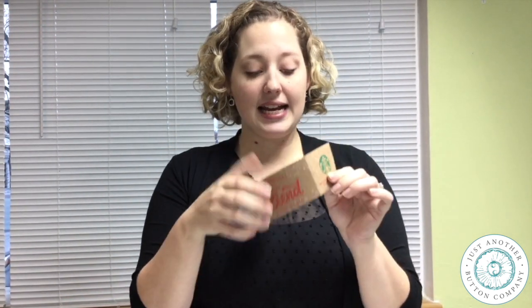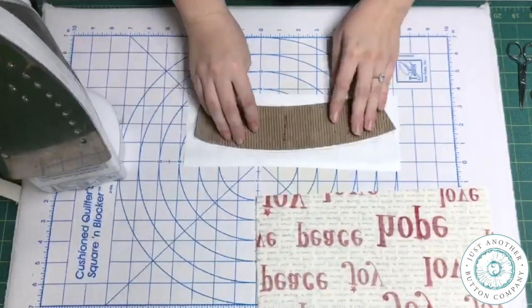Then I'm going to lay it onto a piece of fusible. This is Fusey Bond Lite from So Lazy and I'm going to lay it right side down on the paper side of my fusible.